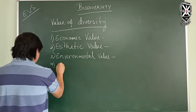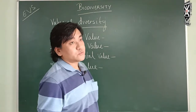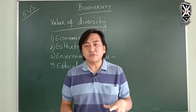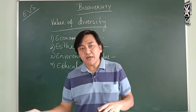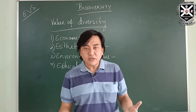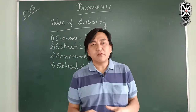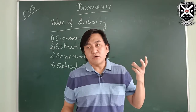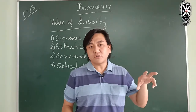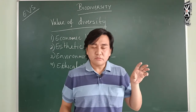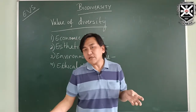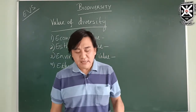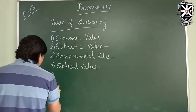The ethical value of biodiversity relates to food chains — the top consumer, producer, and top-order consumer all depend on each other. Disrupting one part of the food chain has an effect on all others. This is an important ethical consideration. The next value is the spiritual value.